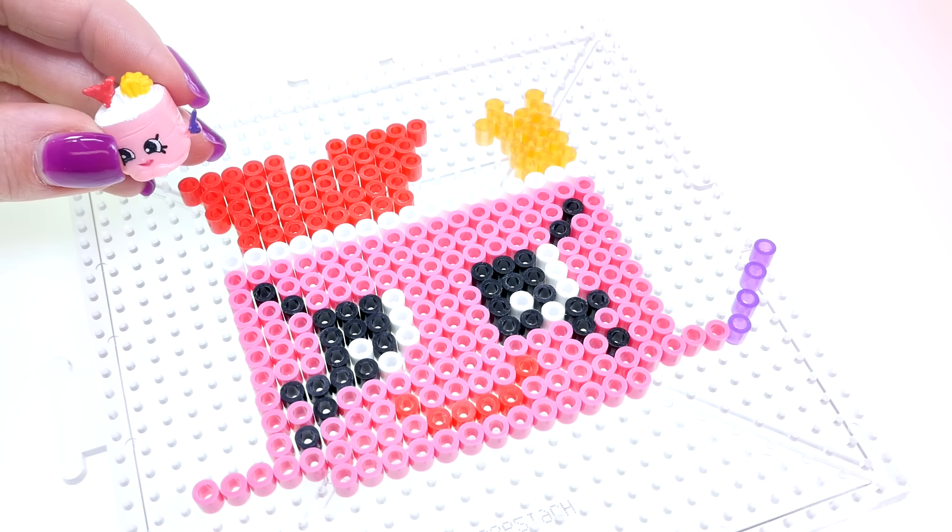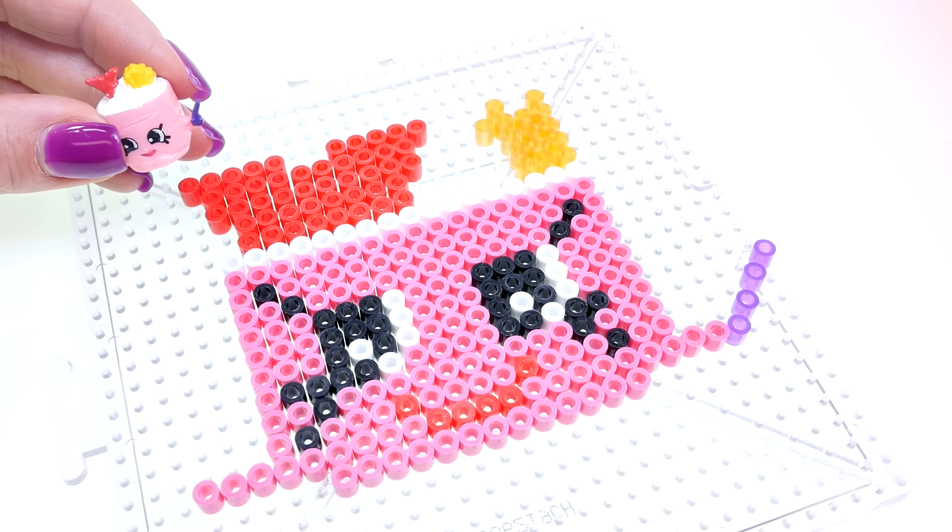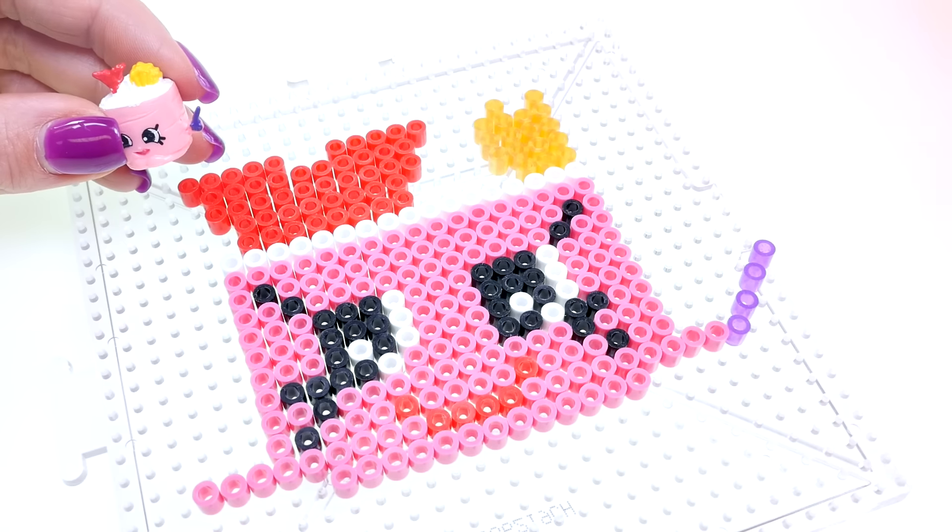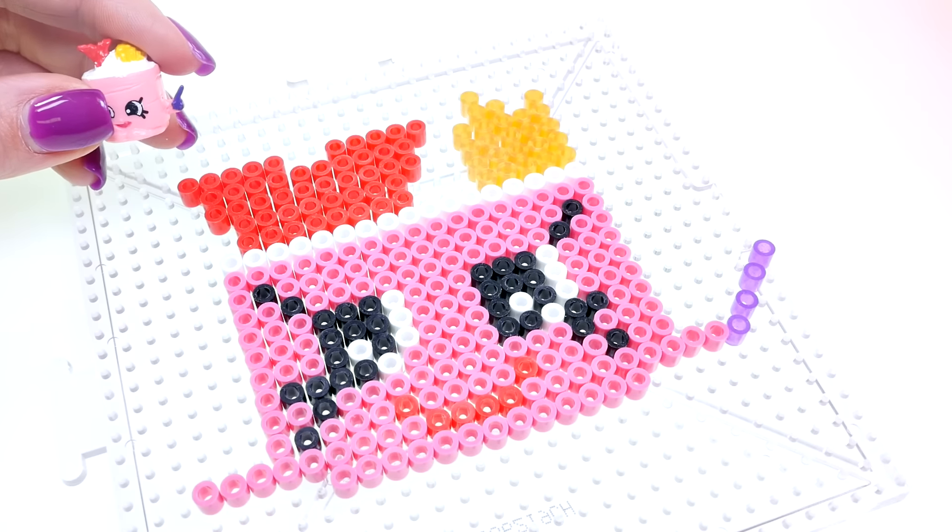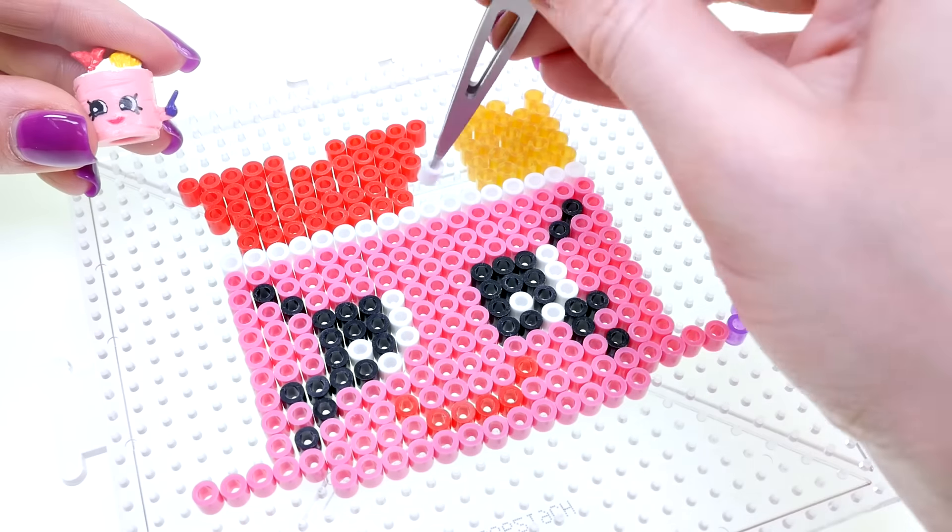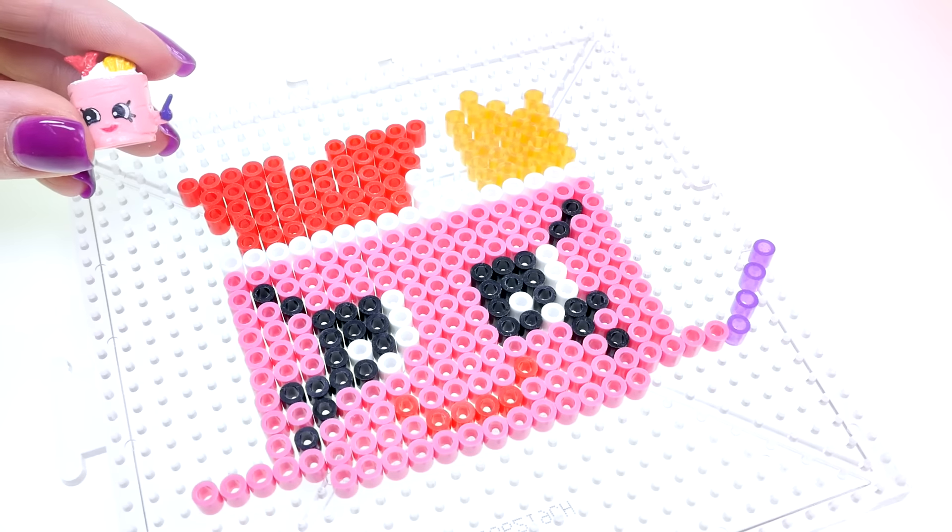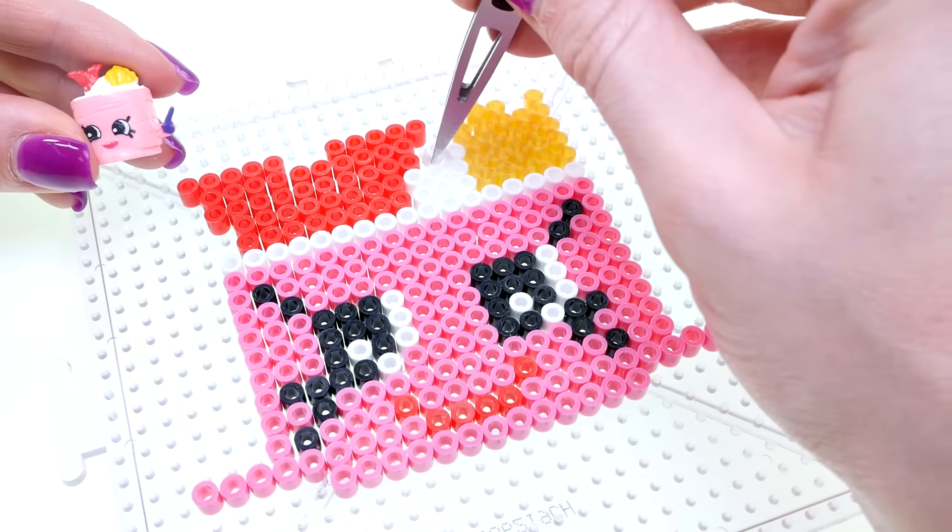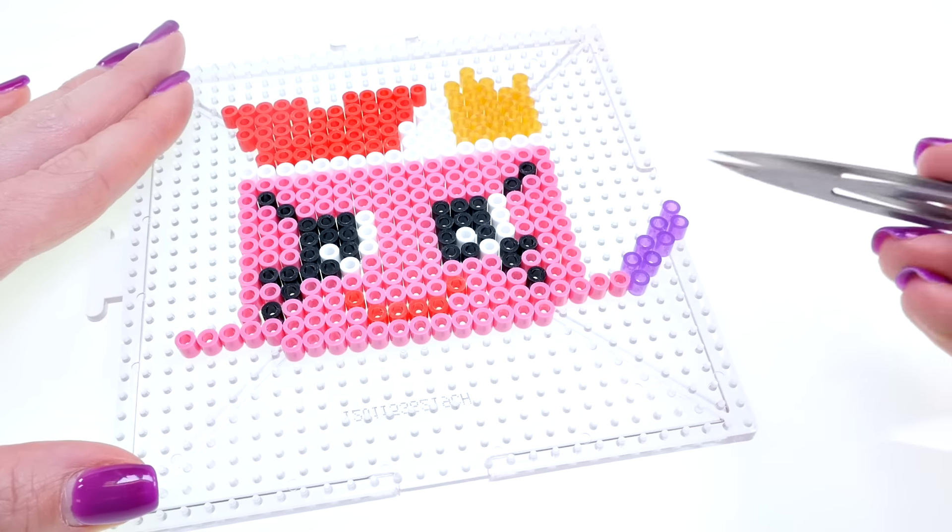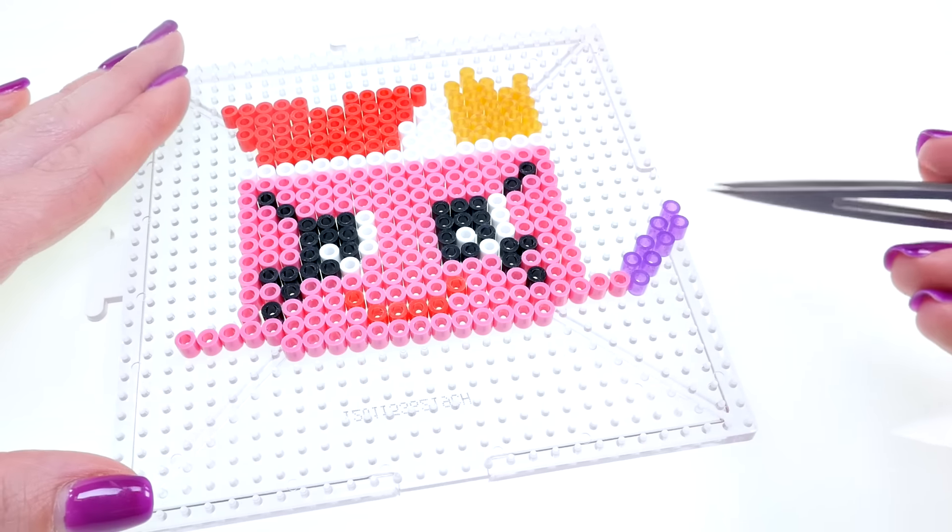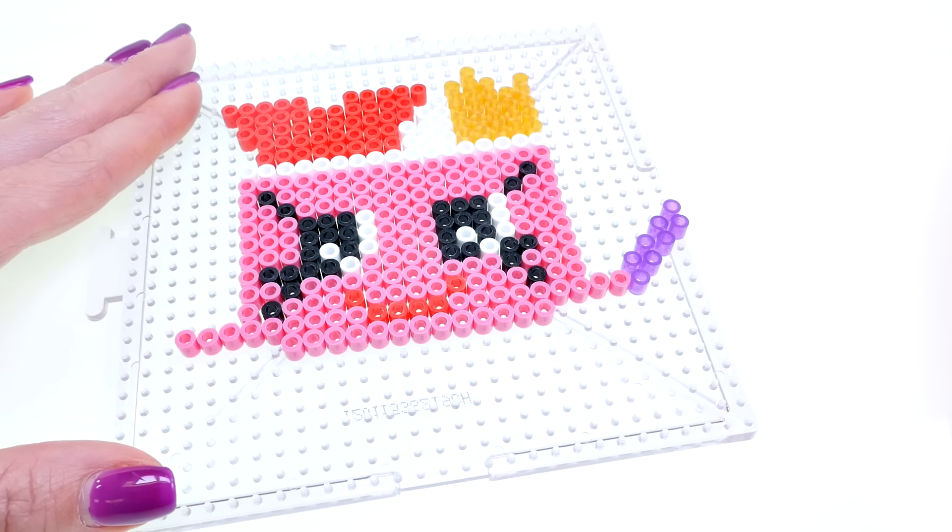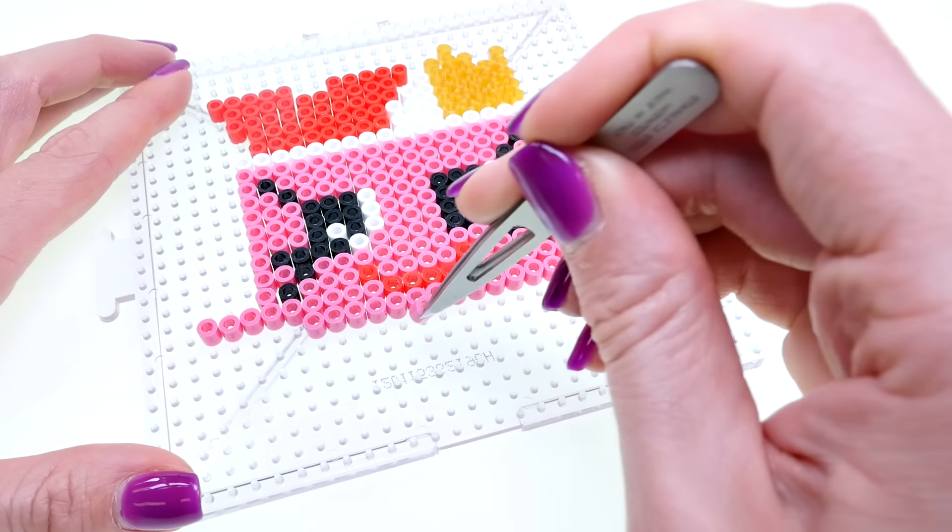Here I made my wand a little bit thicker because I was worried that it wouldn't fuse together. As a final touch I'm going to add some feet for Susie because she has feet.